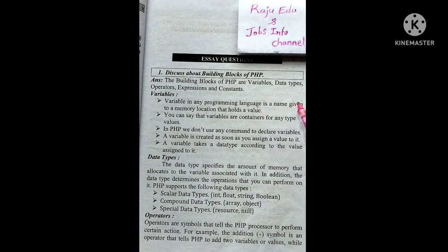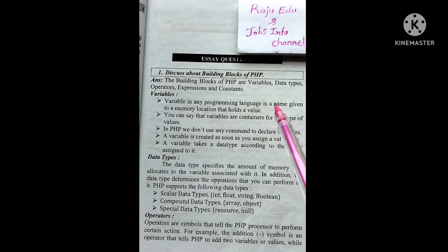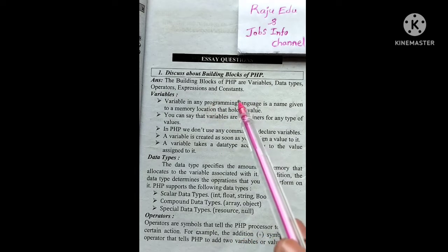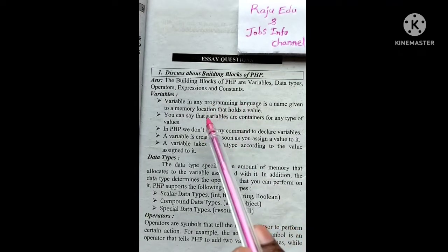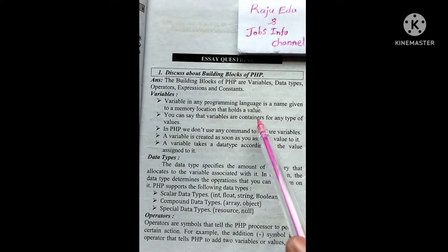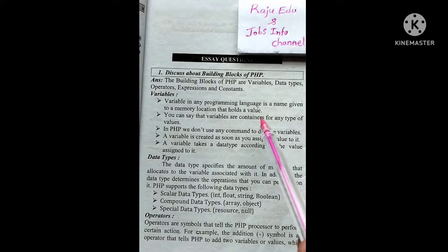A variable in any programming language is a name given to a memory location that holds a value. When we store a value in a memory location, the name we give it is called a variable. You can say that variables are containers for any type of values.